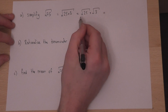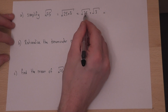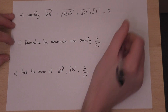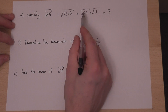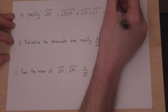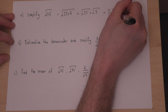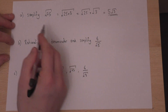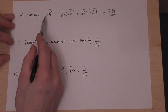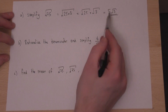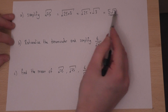We can work out that the square root of 25 is 5, so therefore the answer is 5 lots of root 3. This surd has been simplified and written in the form A root B.